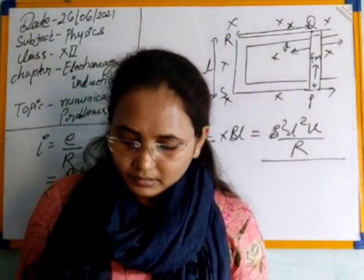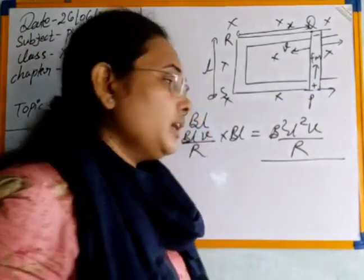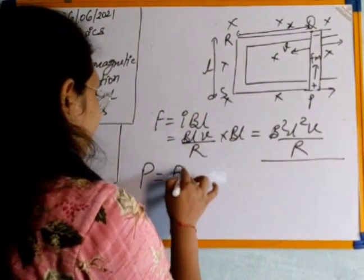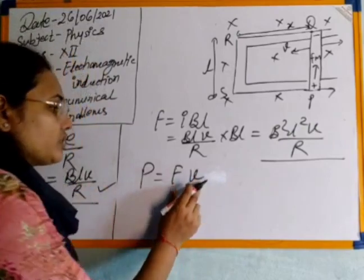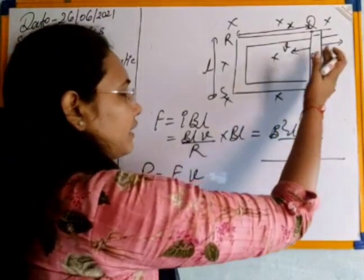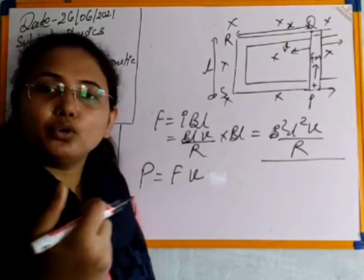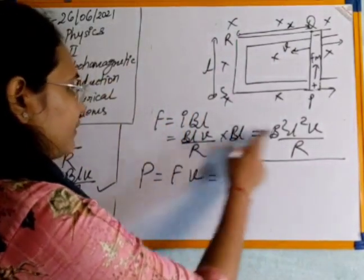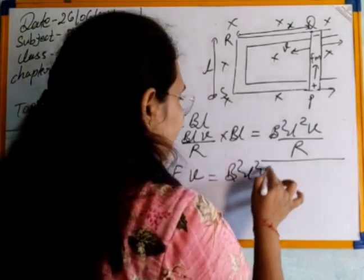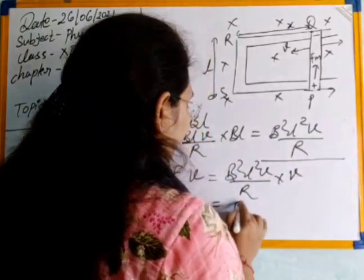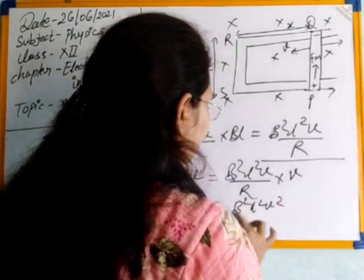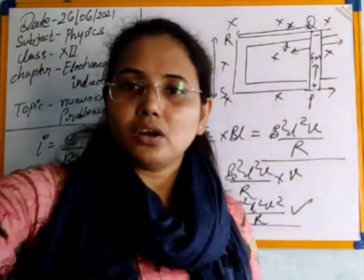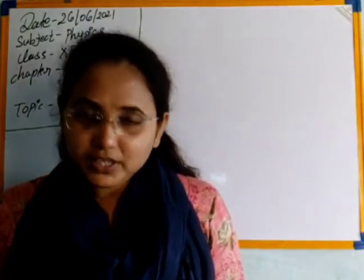For the third part, the power required to move arm PQ: mechanical power is given by P = Force × velocity. Substituting F = B²l²v/R and multiplying by v: P = B²l²v²/R. This is the power needed to move arm PQ. This derivation is now complete.